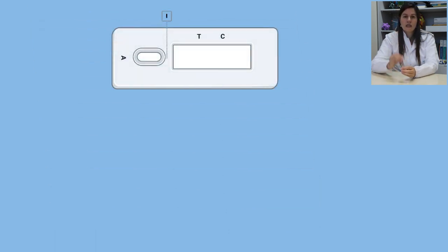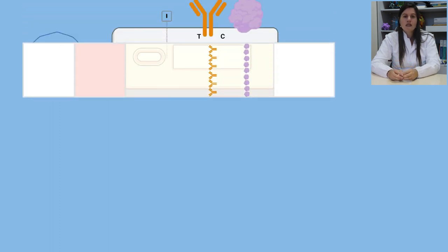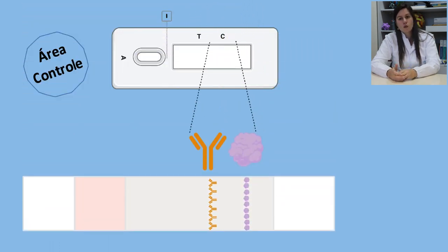A área de controle, aqui representada pela letra C, é o local de controle de reação e que permite a validação do teste. Nesta área, são imobilizados anticorpos anti-imunoglobulinas ou outras proteínas, como a proteína A, que é uma proteína de uma bactéria que consegue se ligar à porção Fc de imunoglobulinas humanas.